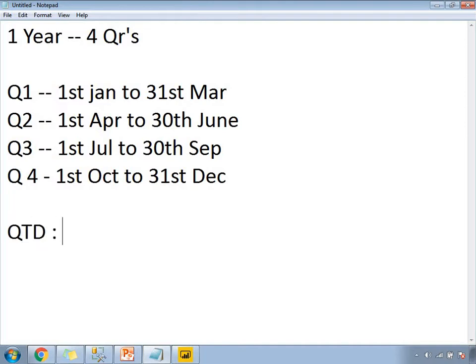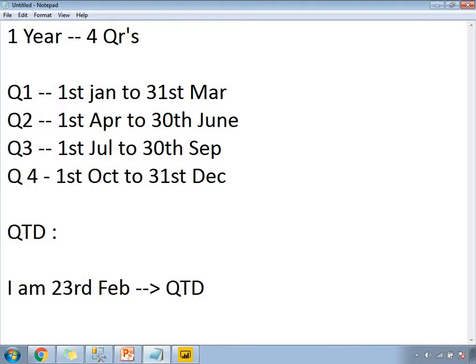Quarter to date means the QTD function calculates from the start of the current quarter to a given date. For example, if I am on 23rd February and I want to calculate QTD, the sales amount will be the sum of sales starting from 1st January to 23rd February.